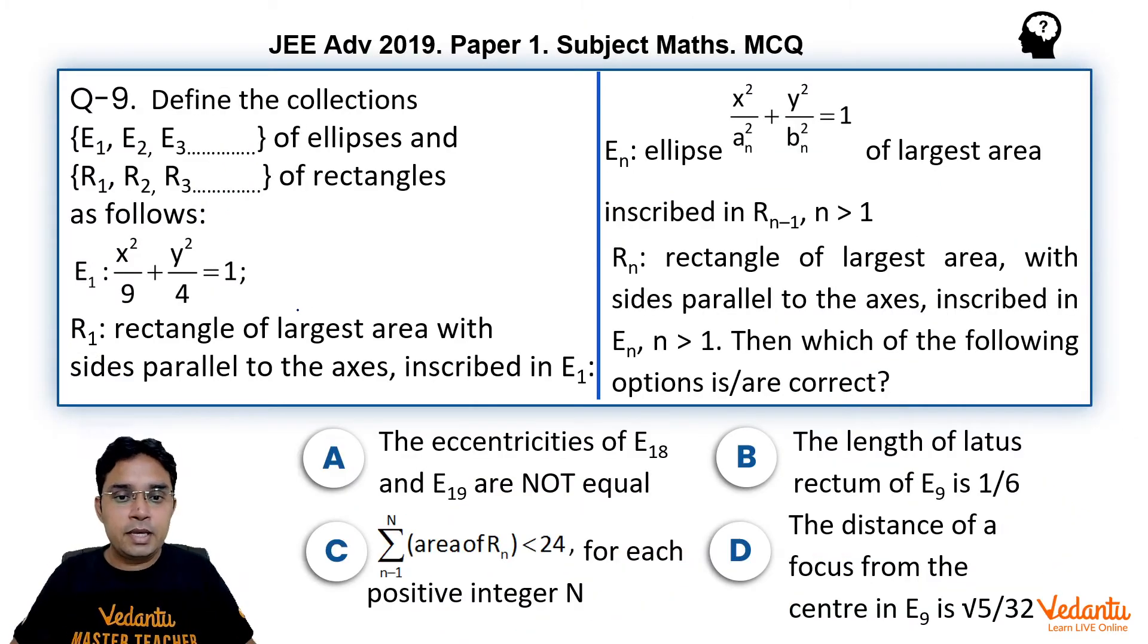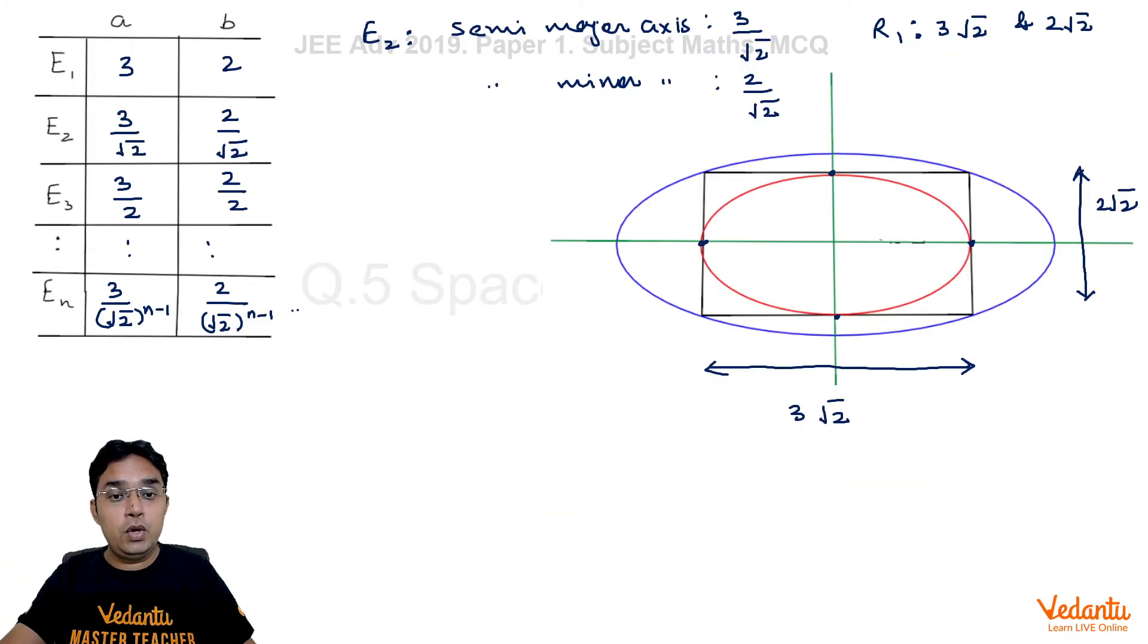So first option they are asking is eccentricities of E18 and E19 are not equal. Now we can see that in every ellipse E1, E2, E3, both semi-major and semi-minor axis they are becoming 1/√2 times but their ratio b/a is always same, and it is 2/3. In fact, eccentricity can also be obtained by the formula √(1 - b²/a²).